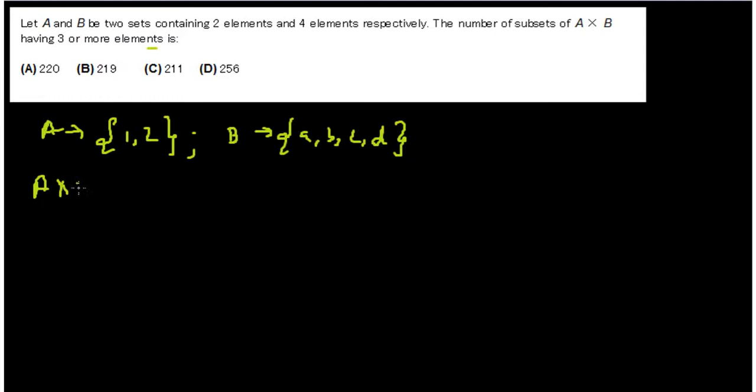So A cross B can have eight elements, right? Now we need sets with three or more elements. So we can have three out of eight elements in 8C3 ways, four elements or five elements or six elements or seven elements or all eight elements.